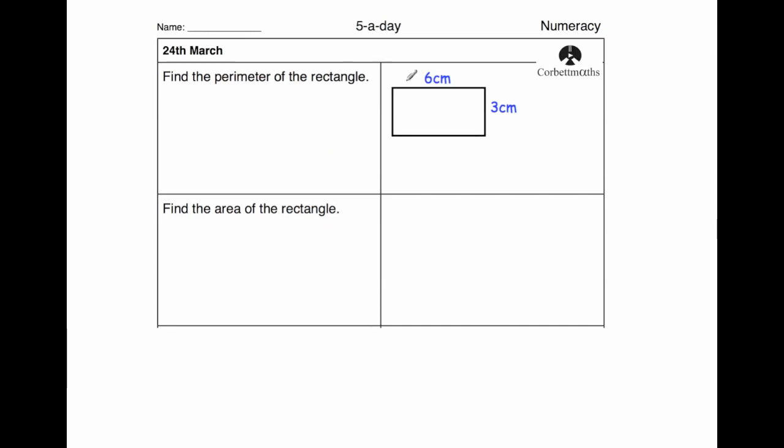Our first question says find the perimeter of the rectangle. To find the perimeter of a rectangle, we just need to work out the distance around the outside. We know the length of the top is 6 cm, that means the bottom is also 6 cm. The right hand side is 3 cm, so the left hand side is also 3 cm. We need to work out what 6 plus 3 plus 6 plus 3 is. 6 plus 3 is 9, plus 6 is 15, plus 3 is 18, so the answer is 18 cm.